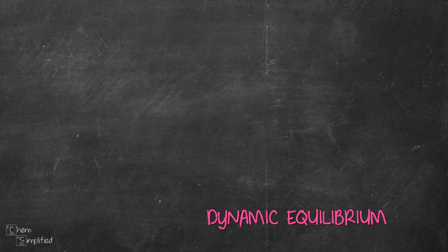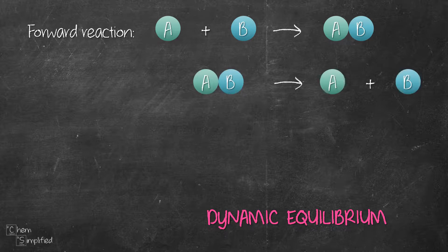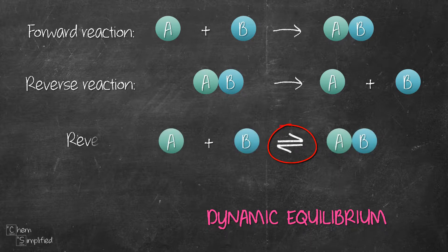Let's take a simple reaction consisting of two reactants, say A and B. They combine to form a complex, say AB. We'll call this reaction the forward reaction. Now if that AB complex splits up to form back A and B, that will be the reverse reaction. Putting these two reactions into one equation, we use the equilibrium arrow to represent the reversible reaction, since A and B can combine to form AB and at the same time AB can break up to form back A and B.